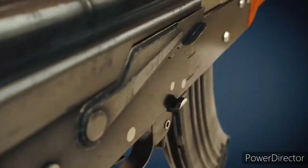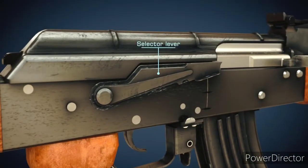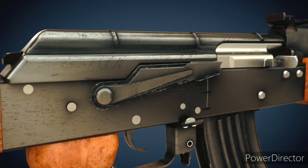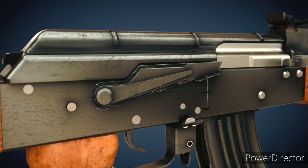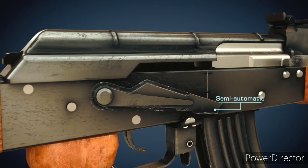The safety lever is used to make the firearm safe. Loading the weapon is not possible in this position. The safety lever allows the shooter to choose between semi-automatic and fully automatic firing mode.